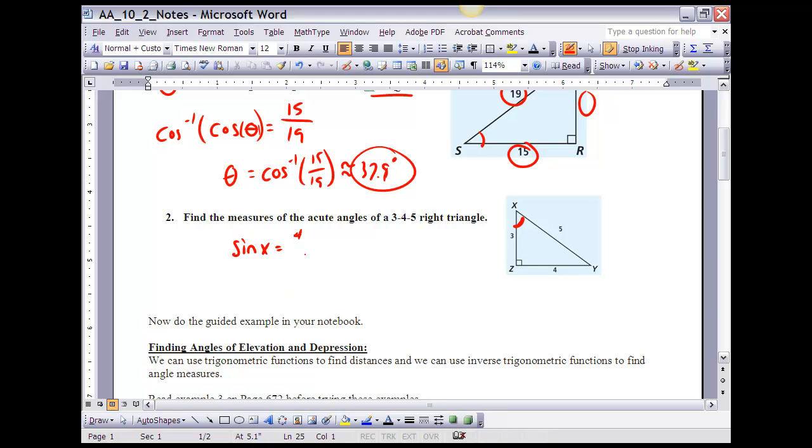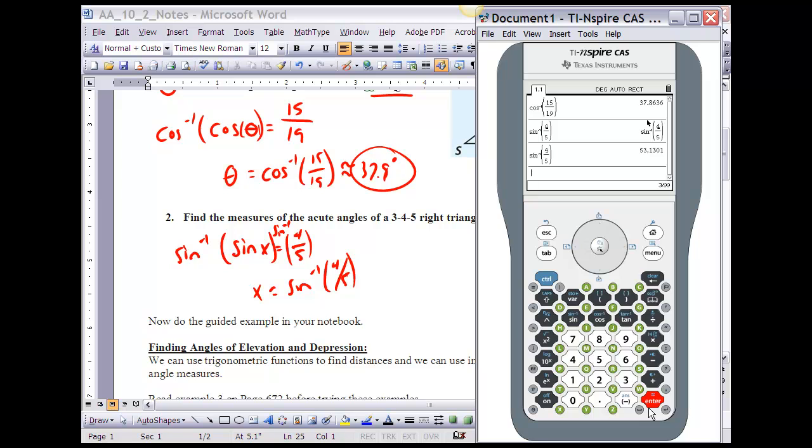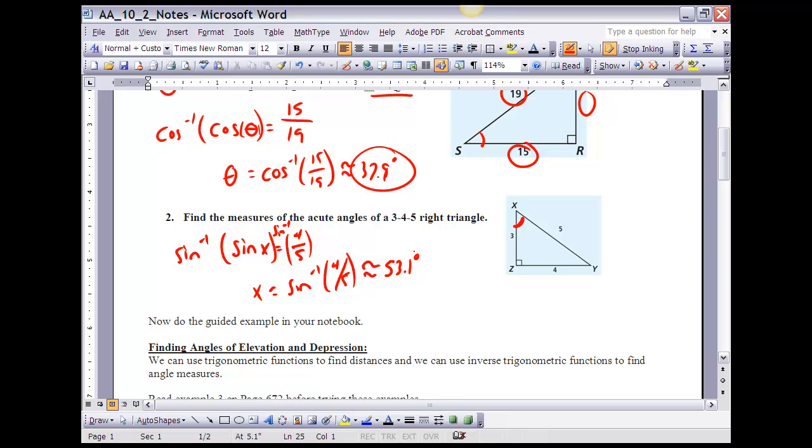over hypotenuse, which is 5. And then, to find x, I'm going to take the inverse sine of both sides. Therefore, x is equal to the inverse sine of 4 fifths. Now, at this point, I'm going to go to my calculator, and you'll notice that it's about 53.1 degrees. So, the measure of angle x is 53.1 degrees.